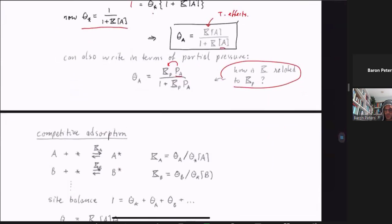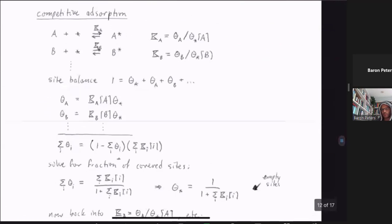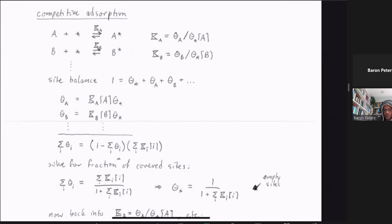Now we generalize to competitive adsorption. In the Langmuir isotherm we had a single gas-phase species adsorbing onto sites. Now we consider many species that can adsorb onto empty sites, still obeying the rule that each site holds only one adsorbate. Species A and B compete for those sites with different equilibrium constants K_A and K_B, which modulates the competition. Each species has a mass-action expression relating its coverage to the bare-site coverage and its gas-phase concentration.